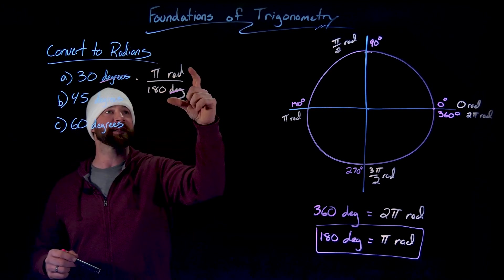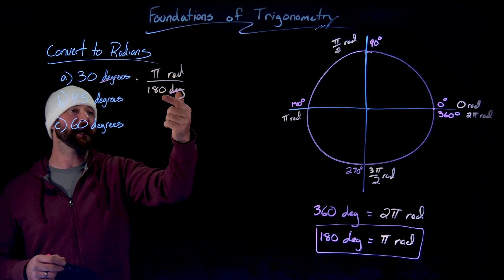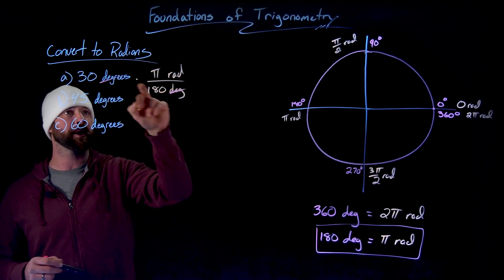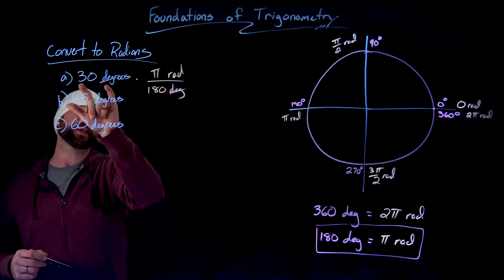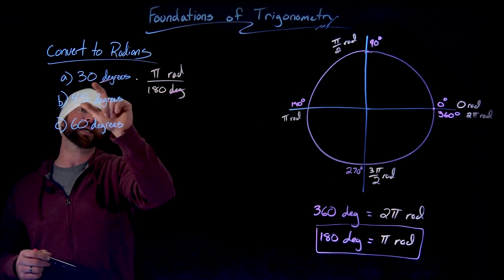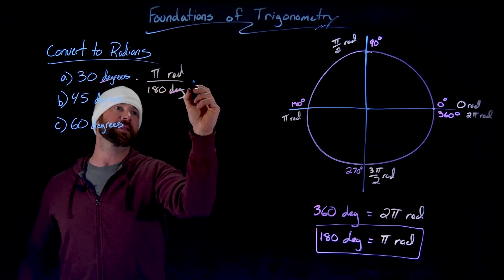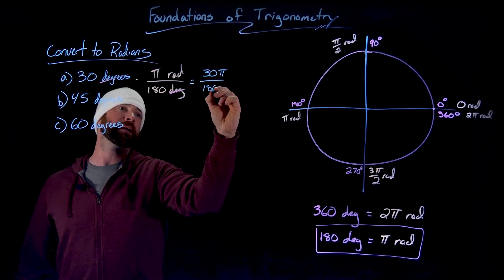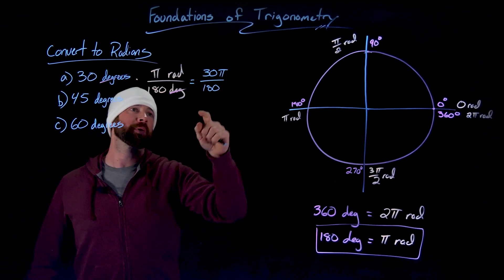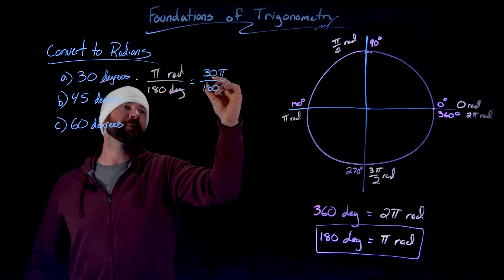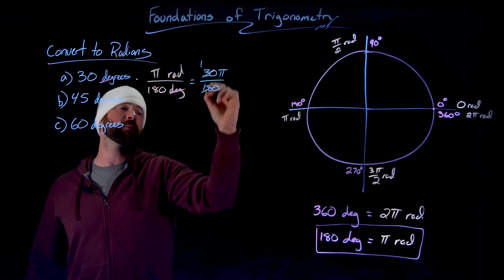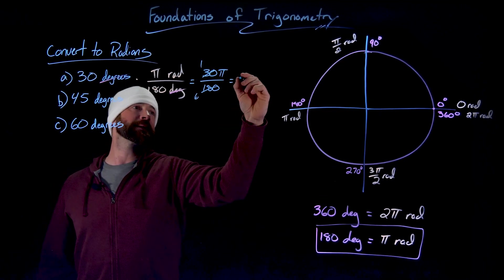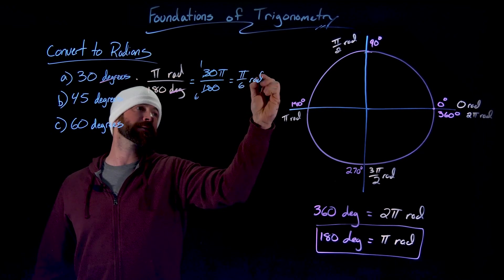So I multiply 30 degrees by this conversion factor of pi over 180. And again, I do it this way, not 180 over pi because I want degrees on bottom to cancel the units. And then what I get here is 30 times pi over 180. So what I get is 30 pi over 180 radians. But what I want to do is reduce this. I can divide these both by 30 to get one and a six to give me that 30 degrees is equal to pi over six radians.